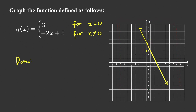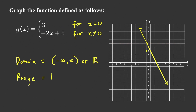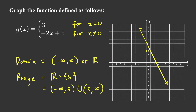The domain of this function is still the set of all real numbers, from negative infinity to infinity. The range is all real numbers except 5 — if you draw a horizontal line at y equals 5, it won't intersect the graph. In interval notation, the range is negative infinity to 5, excluding 5, union with 5 to infinity.